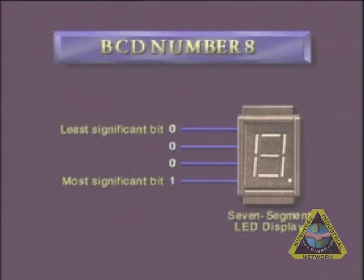Similarly, seven segment displays will receive four BCD lines, or wires, describing the BCD digit to the display.